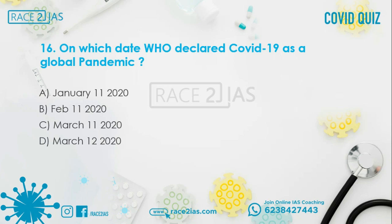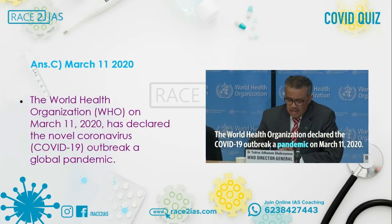Question number 16: On which date did WHO declare COVID-19 as a global pandemic? Option A: January 11. Option B: February 11. Option C: March 11. Option D: March 12. The right answer is March 11. The World Health Organization on March 11, 2020 declared the novel coronavirus outbreak as a global pandemic.